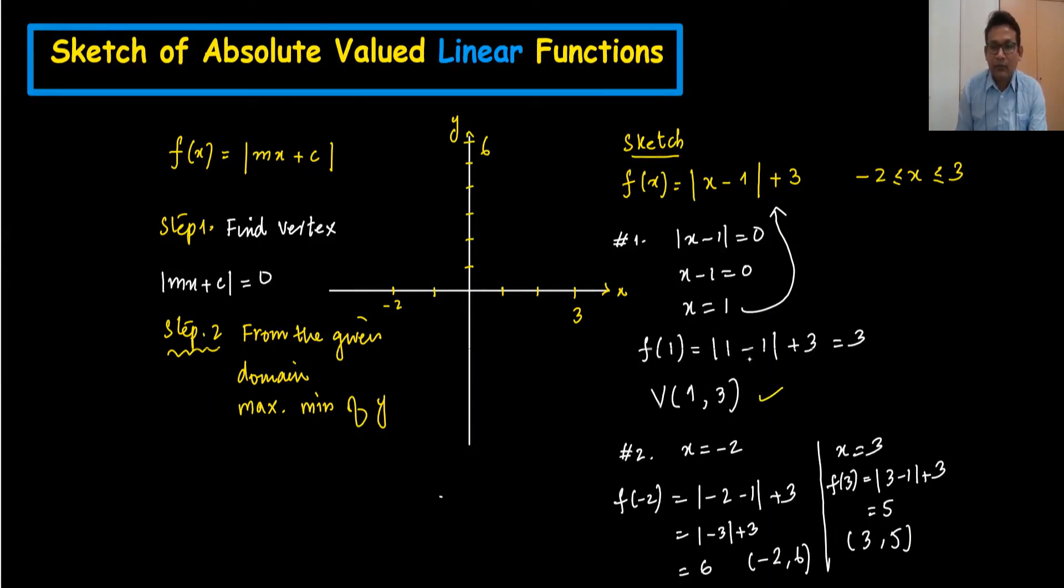Vertex is 1 and 3. Like x is 1 and 3 is here. I will write this coordinate first: (1, 3). Then minus 2 and 6. (-2, 6) is coming here. And 3 and 5 is coming here. So this is the coordinate. And when we join this, it's a V-shape graph. And we have done it. Very simple way to find.